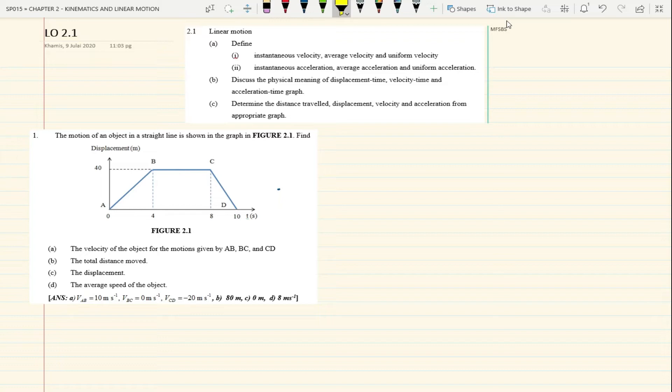So we are going to cover how to determine the distance traveled, displacement, velocity, and acceleration from the graph. This is what we are going to cover inside the tutorial. And we are also going to discuss the physical meaning of displacement against time, velocity against time, and acceleration against time graphs.